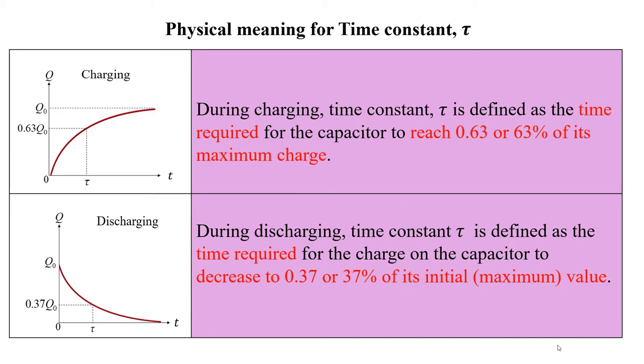During discharging, time constant tau is defined as the time required for the charge on the capacitor to decrease to 0.37 or 37% of its initial value.